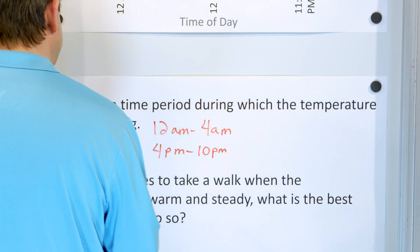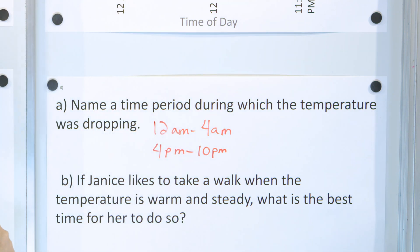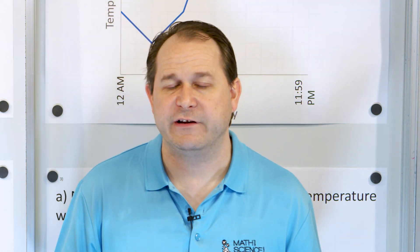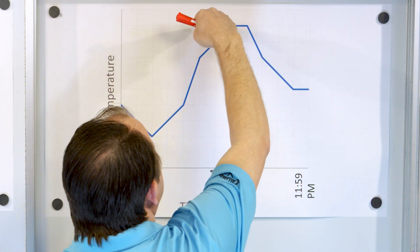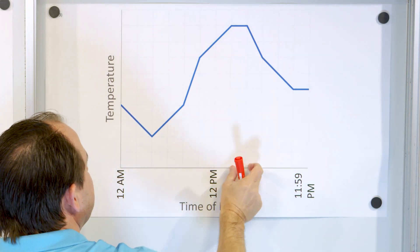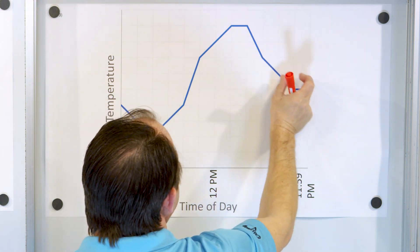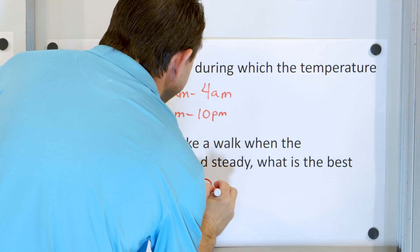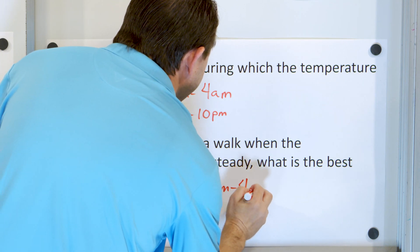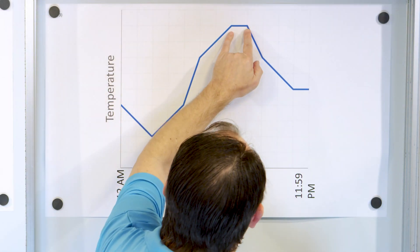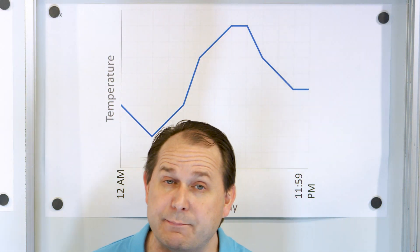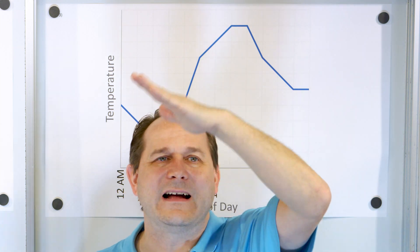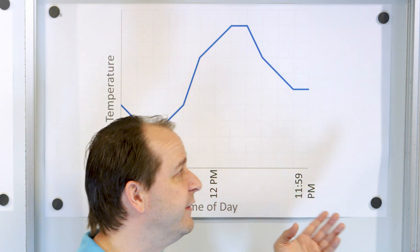Part two: if Janice likes to take a walk when the temperature is warm and steady, what is the best time for her to do so? When we say warm and steady, steady means things are not changing — the temperature is not changing. So you want to find the parts of the graph where the temperature is flat across time. There are two flat regions. This one is warmer than the other, so the best block of time is from 2 p.m. to 4 p.m. The better mathematical way to say it is that from 2 p.m. to 4 p.m. the slope, or the rate of change of the temperature, is zero. When we have a flat line, the slope is always zero — there is no slope. So the rate of change in that region is zero.